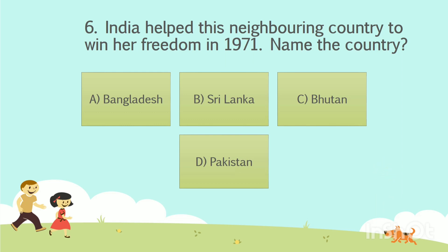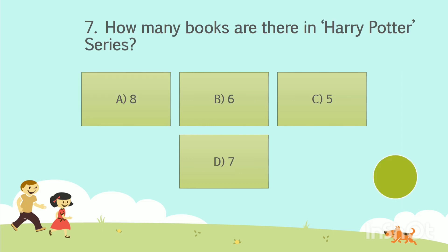The answer is Option A: Bangladesh. Question number 7. How many books are there in the Harry Potter series? Option A: 8. Option B: 6. Option C: 5. Option D: 7. Your time starts now.